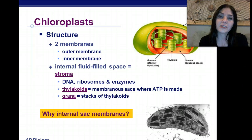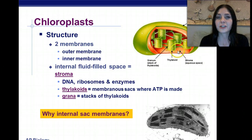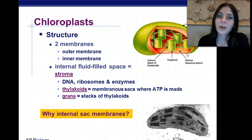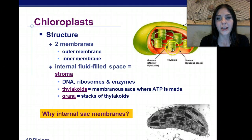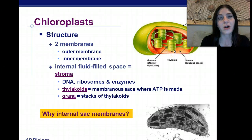The structure of the chloroplast is very similar to the structure of the mitochondria. It too has two membranes — an outer membrane and an inner membrane. We also have an internal fluid-filled space called the stroma, which contains all of the DNA, the enzymes, and the ribosomes. Inside the stroma, each individual disc is called a thylakoid, surrounded by a thylakoid membrane. A whole stack of these thylakoids is called a granum.